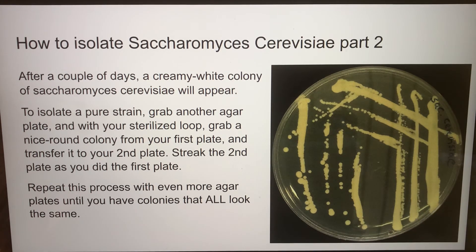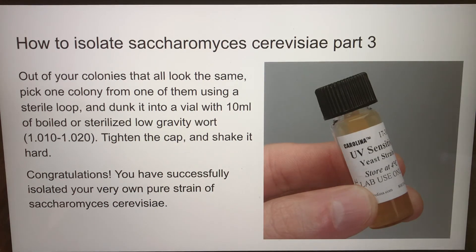After a couple of days, a creamy white colony of Saccharomyces cerevisiae will appear. To isolate a pure strain, grab another agar plate and with your sterilized loop, grab a round colony from your first plate and transfer it to your second plate. Streak the second plate as you did the first. Repeat this process with more agar plates until you have colonies that all look the same. Then pick one colony using a sterile loop and place it into a vial with 10 milliliters of boiled or sterilized low gravity wort. Tighten the cap and shake it — you have successfully isolated your own pure strain of Saccharomyces cerevisiae.